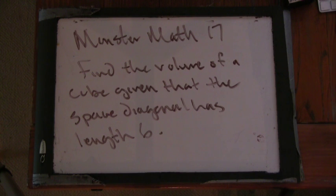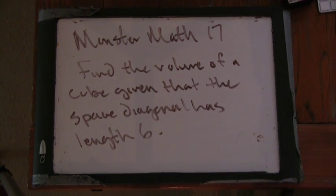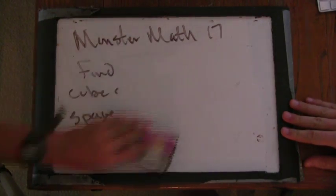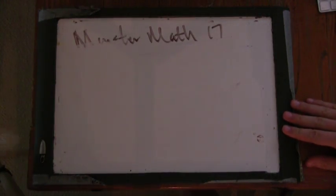So the first problem you picked for this section is find the volume of a cube given that the diagonal, the space diagonal has length 6. That's a good problem. So let's draw a cube.